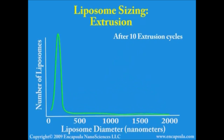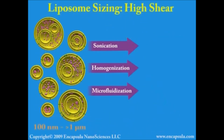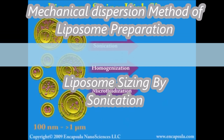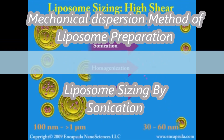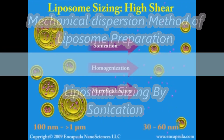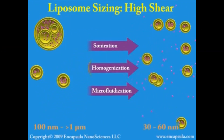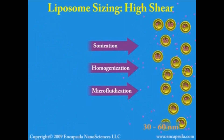The liposome suspension becomes more translucent during extrusion, indicating that the liposomes are becoming smaller. The lower size limit of a liposome is 30 to 60 nanometers, depending on the type of lipid used. High shear methods are used to reduce multilamellar liposomes to unilamellar liposomes at their lowest size limit.